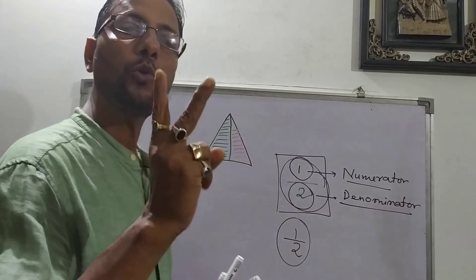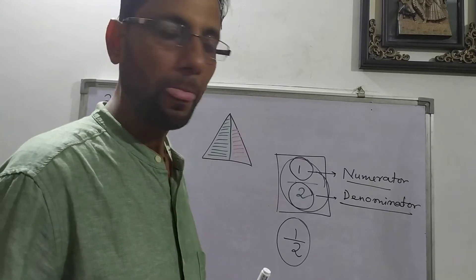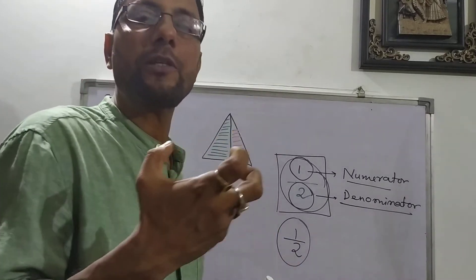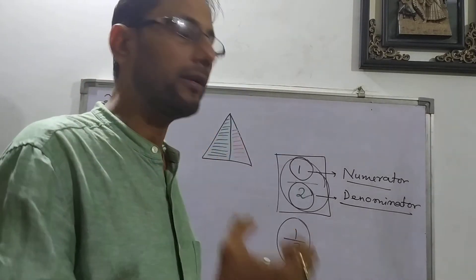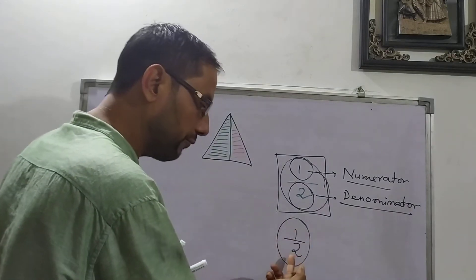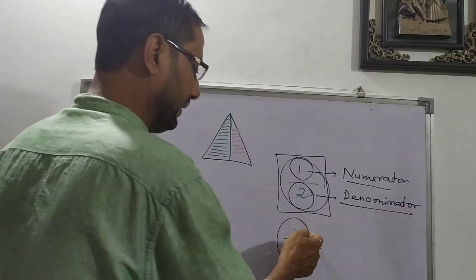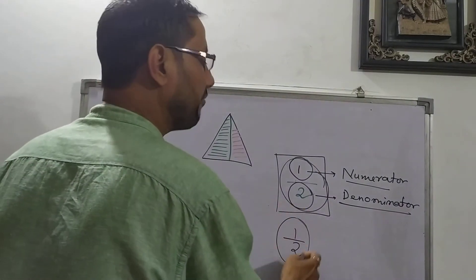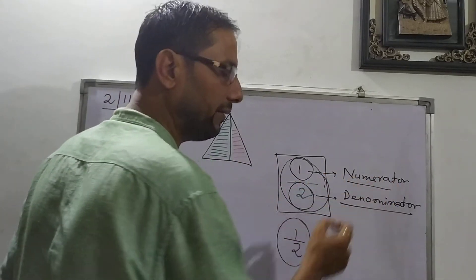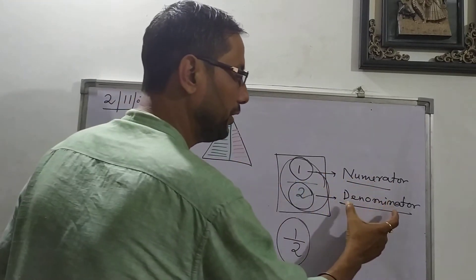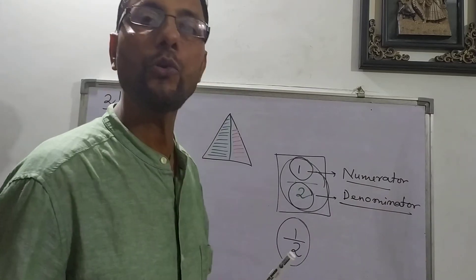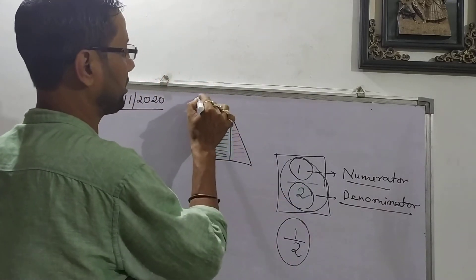This number is called a fraction. That means I have divided a diagram into two parts, so one part is green. How will I express the green part? I will write one out of two. This is called a fraction, where we have a numerator and denominator. So what we are going to learn today is fractions.